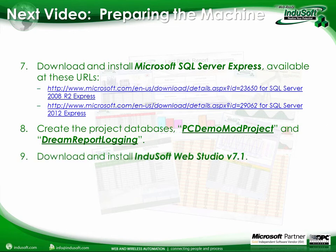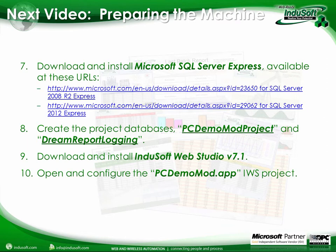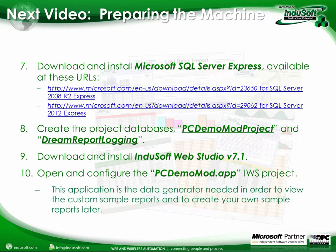Next, we'll download and install IWS, which you're probably already familiar with. We're going to open the PC Demo Mod application — it is in the zip file that is on the Indusoft Dream Report website. Once you download Dream Report, the projects are in a separate zip file, so be sure to download those as well. This application is the data generator, and you can create your own sample reports later that use this data.